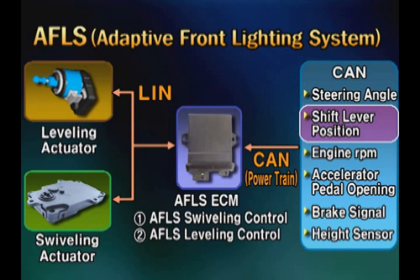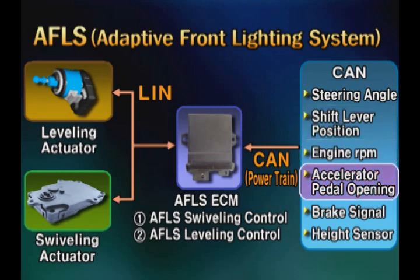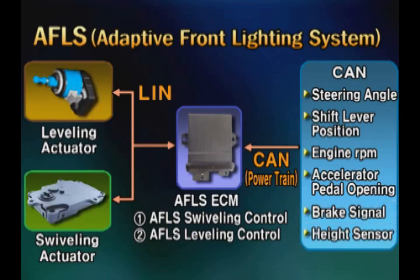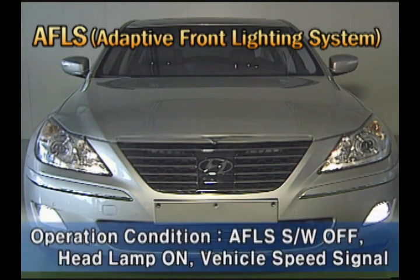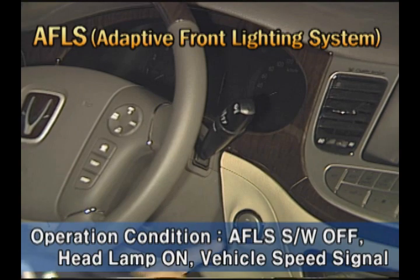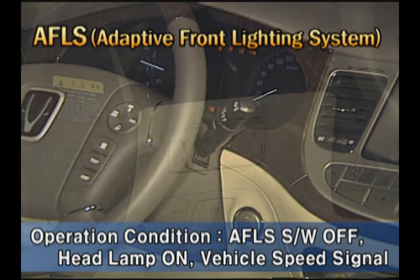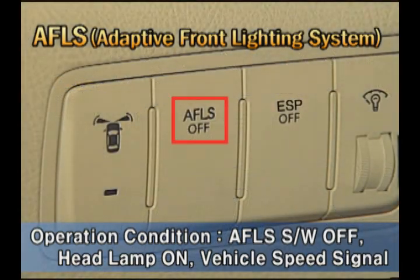shift lever position, engine RPM, accelerator pedal opening, brake signal, and height sensor from the high-speed CAN. The operating condition is that the headlamp is in low-on state, vehicle speed is input, and the AFLS off switch is in the off state.